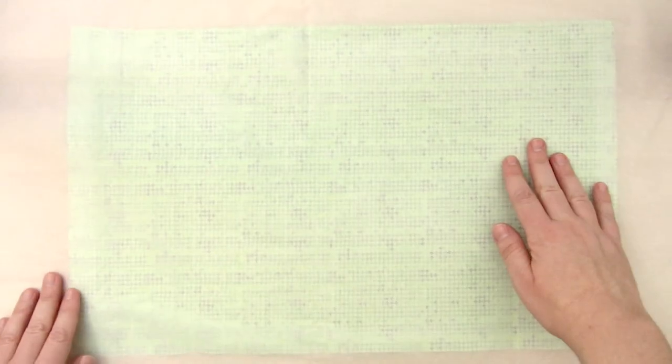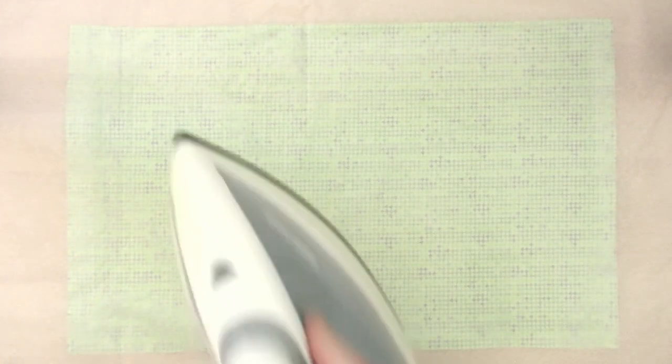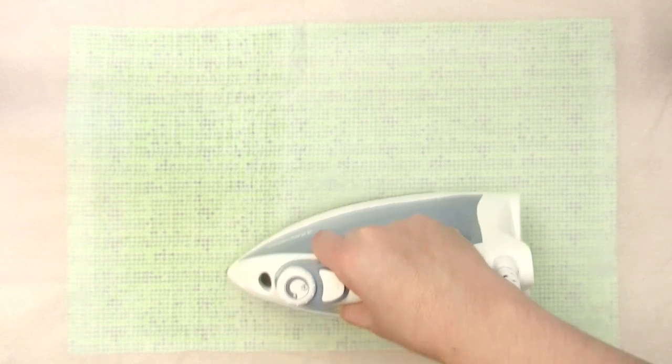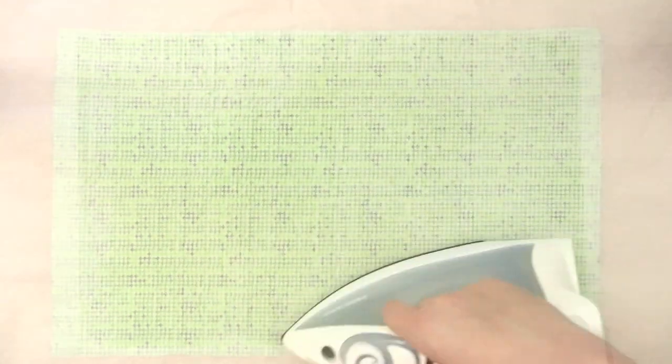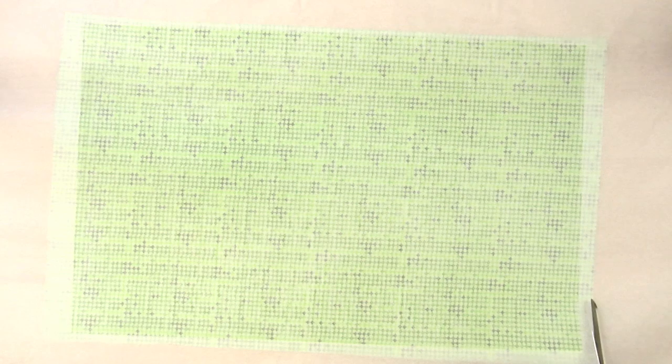Now take your tissue paper and iron it on until you see the full shape of the HeatNBond. Then cut the excess tissue paper off. It doesn't have to be cut perfectly because the border will eventually be cut off when you use it to make a book cover.